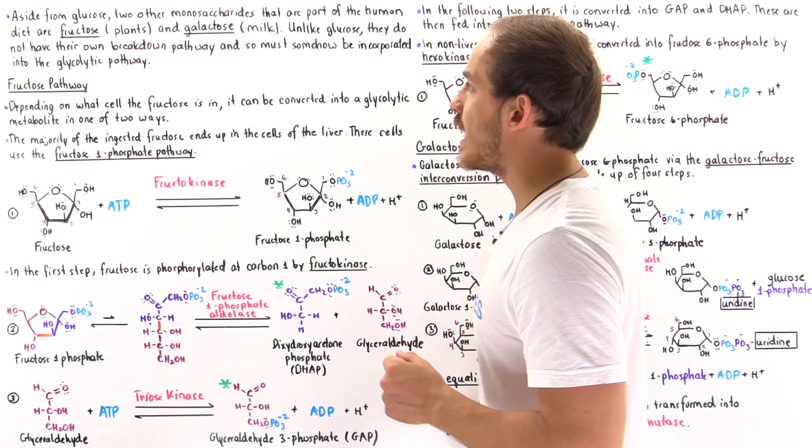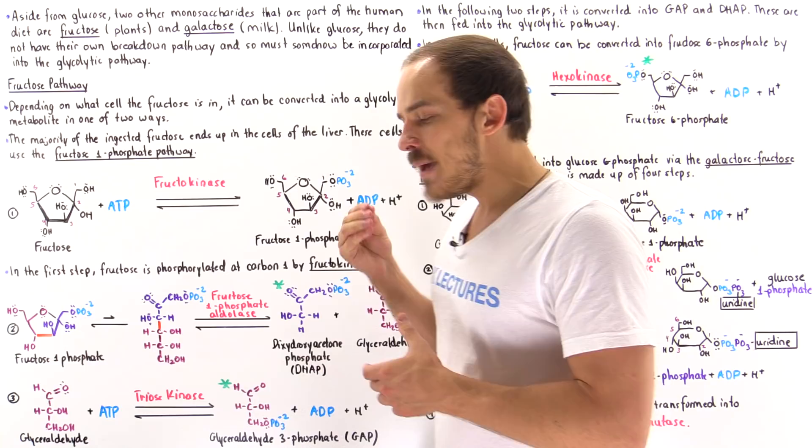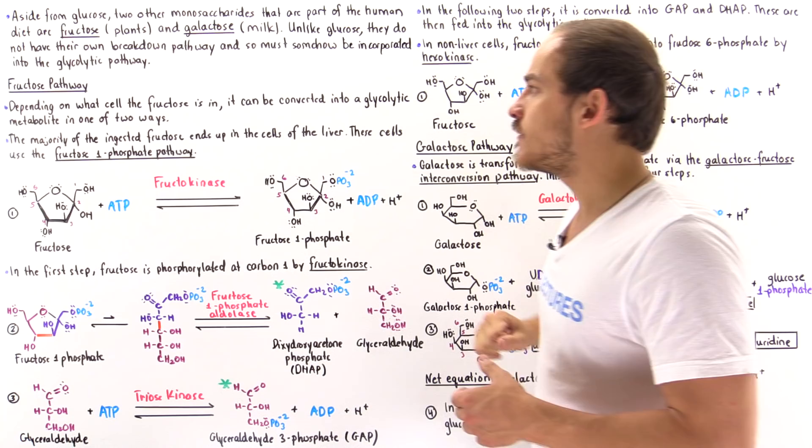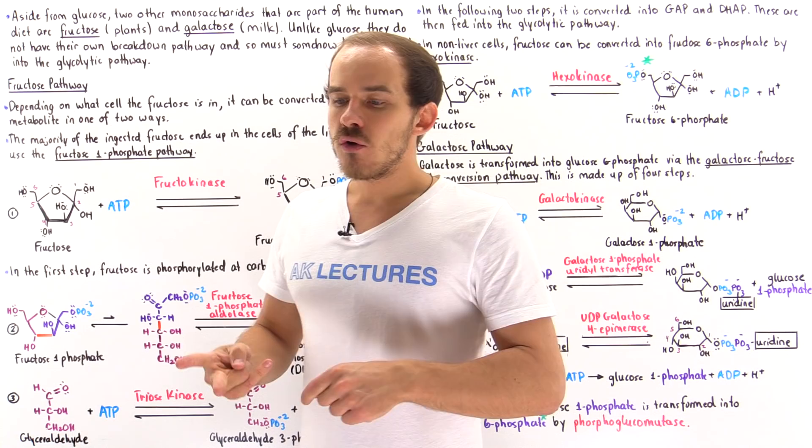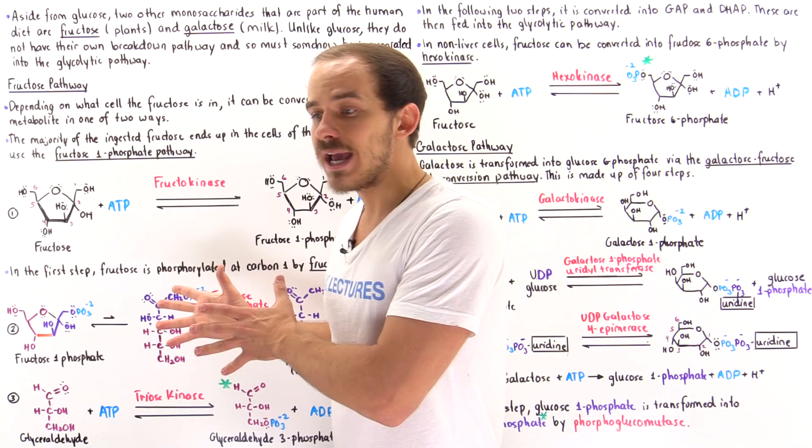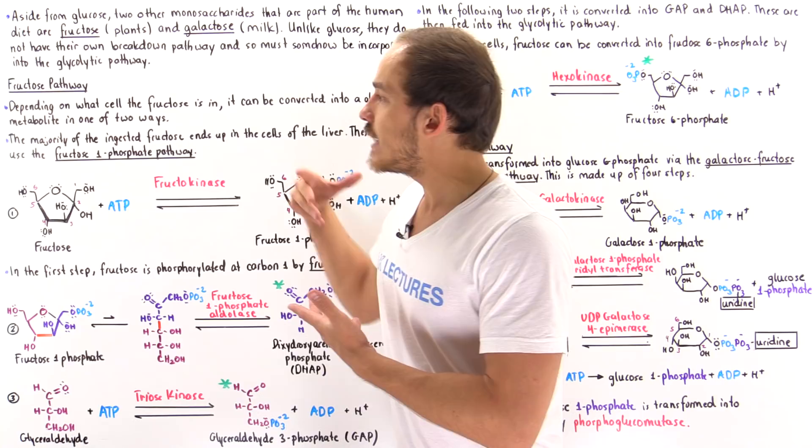Let's begin by discussing fructose. Depending on what type of cell fructose actually ends up in, it can be converted into a glycolytic metabolite in one of two ways. Let's begin by discussing the fructose 1-phosphate pathway, which is the pathway found in liver cells, since the majority of fructose molecules actually end up in these liver cells.